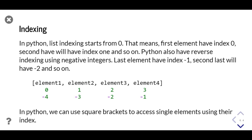Now we'll learn about indexing in lists. Indexing in lists starts from 0, meaning the first element has index 0, the second has index 1, and so on. Python also has negative indexing, which works in reverse — the last element has index -1, the second last has index -2, and so on. We can use square brackets to access single elements using an index.